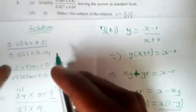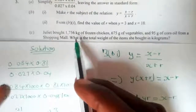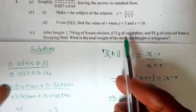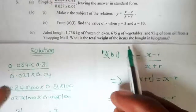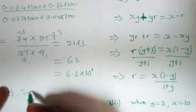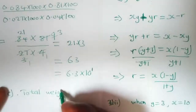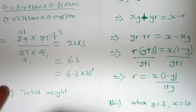Tracy bought 1756 kg of frozen chicken, 675 grams of vegetables, and 95 grams of corn oil from the shopping mall. We need to find the total weight of the items she bought in kilograms, so we add all of them together and leave our answer in kilograms.